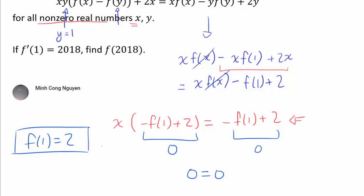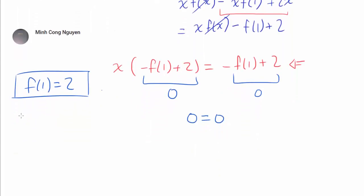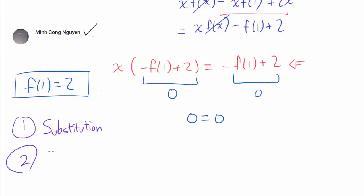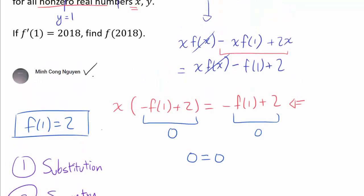From here, I will show two different methods. The first uses another substitution and was the method employed by Ming Kongguyen, the very first person to correctly answer this challenge. The second method uses the symmetry of the functional equation. The first solution is faster, but the second is also elegant and educational.